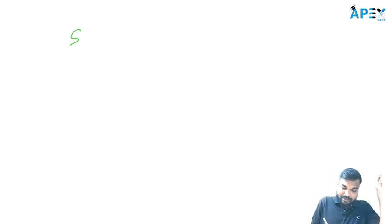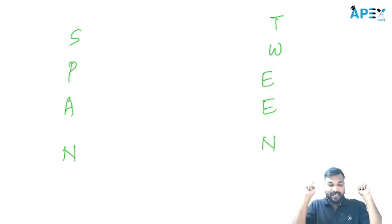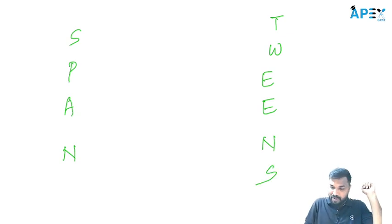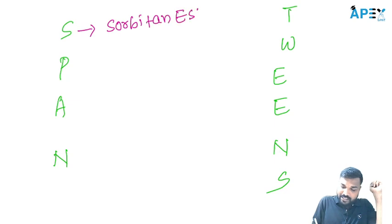First, we will understand what are the sorbiton esters. We have two important brand names. One is the Span and the other one is the Tween. So what is the Span? How to remember the Span? The name itself is saying: S — I am the sorbiton ester.